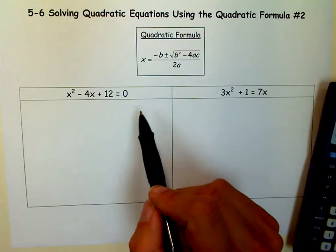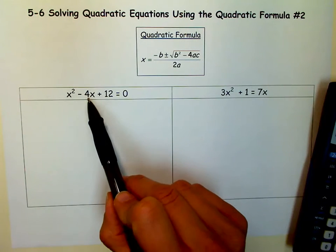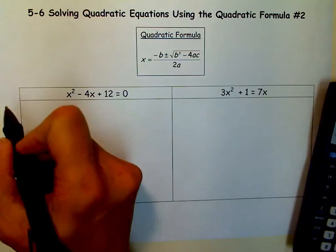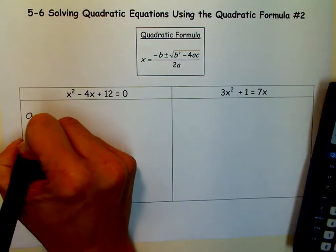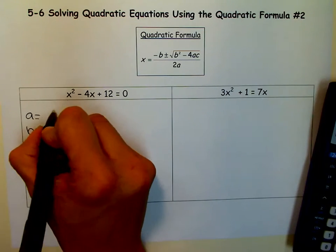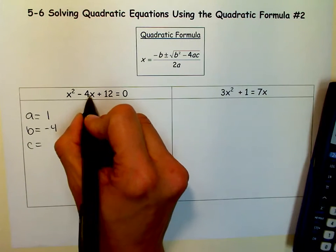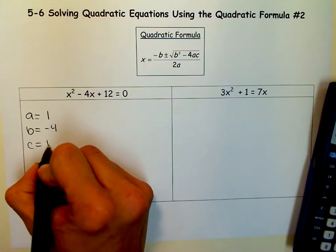So number one importance on the list is to make sure it's in the correct form with the x squared, the x, and then the constant. Because if it is, then you are ready to write your a, b, and c, and I always encourage kids to write a, b, and c and what they are. So a is 1 because that's the coefficient in front of the x squared, b is the linear coefficient, so it's negative 4, and c is your constant.